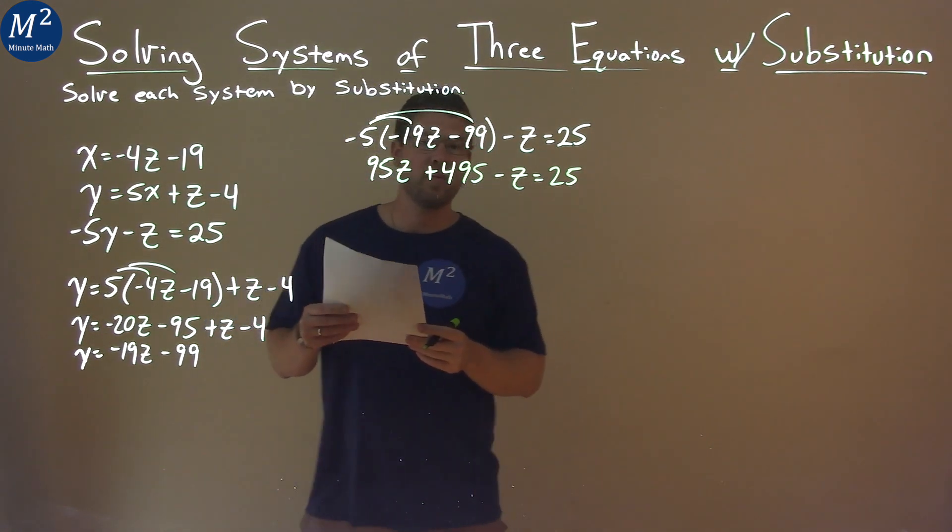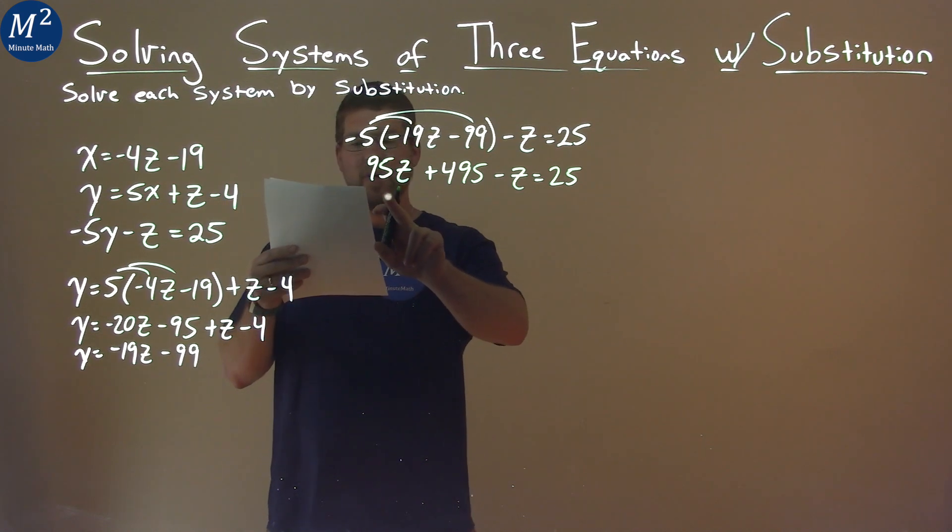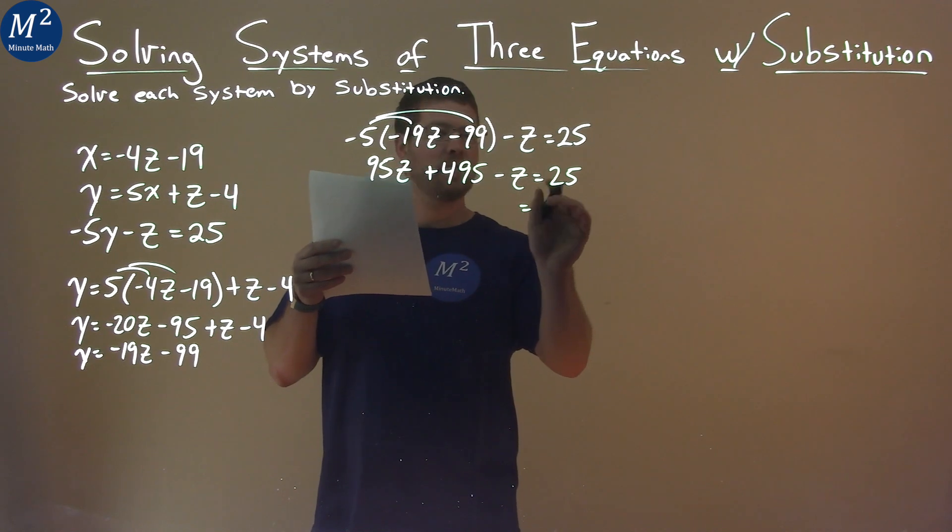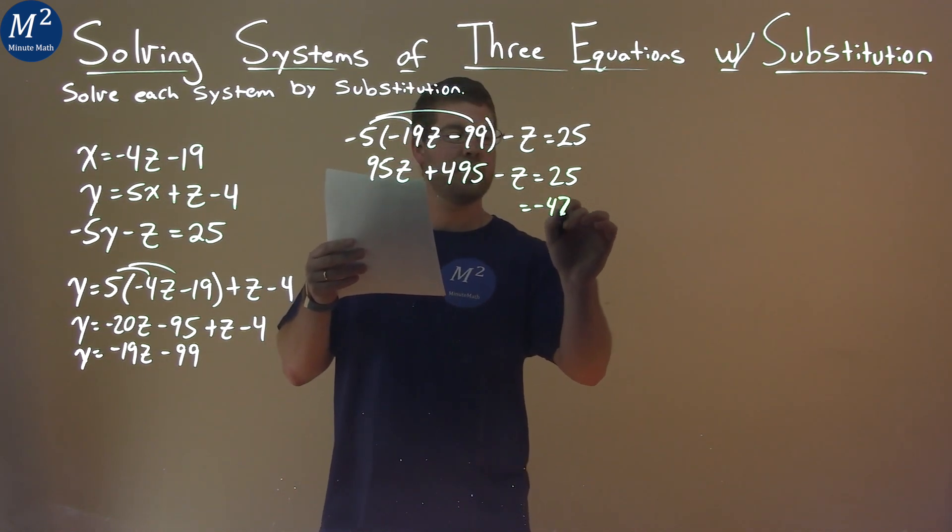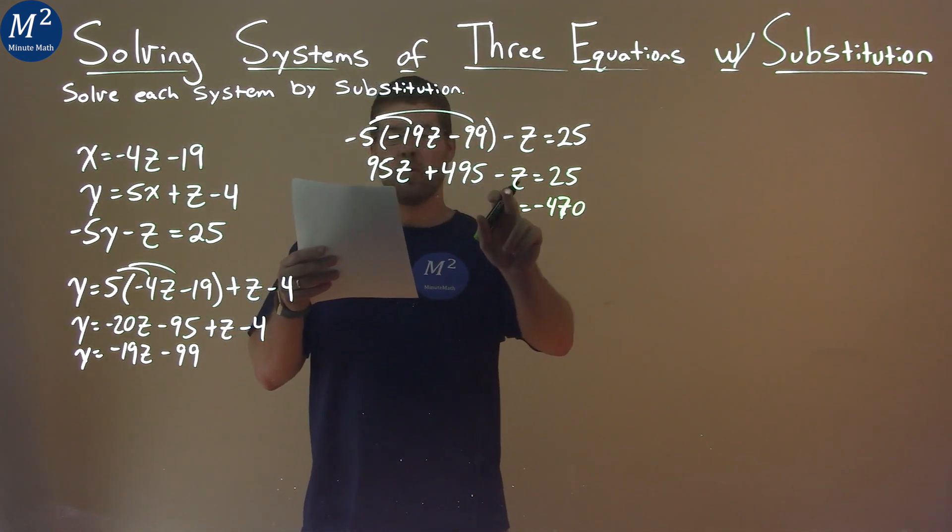From there, we want to simplify combining our like terms. So if we subtract 495 to the other side, we get 25 minus 495 is negative 470.